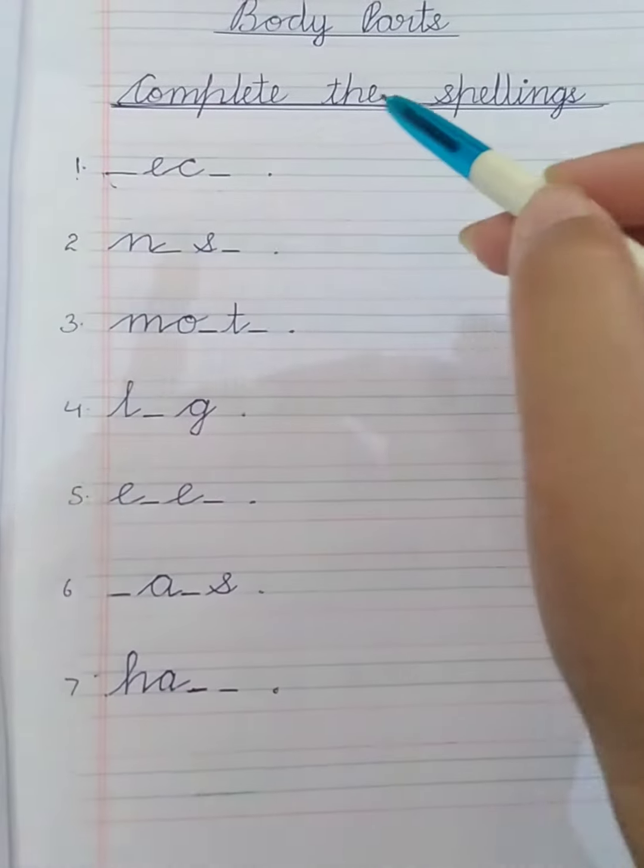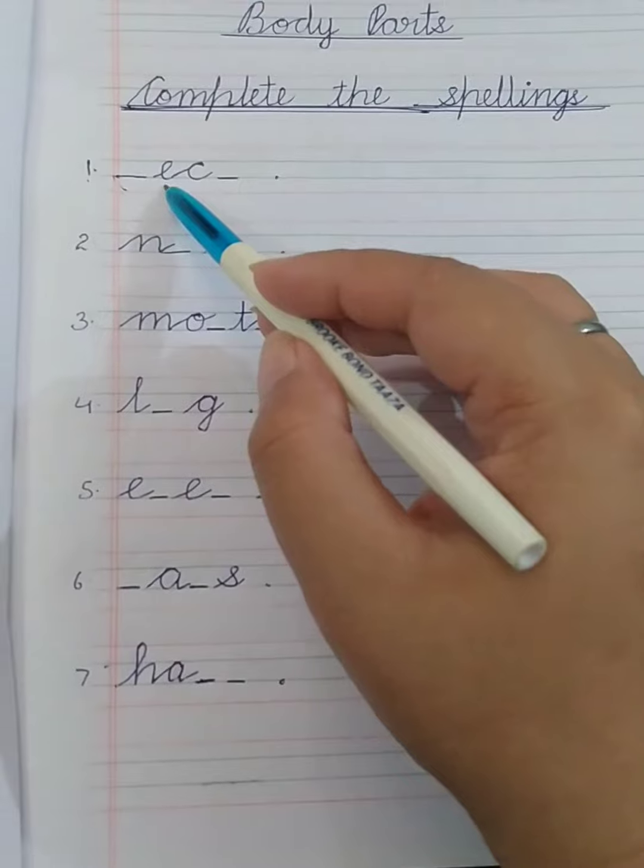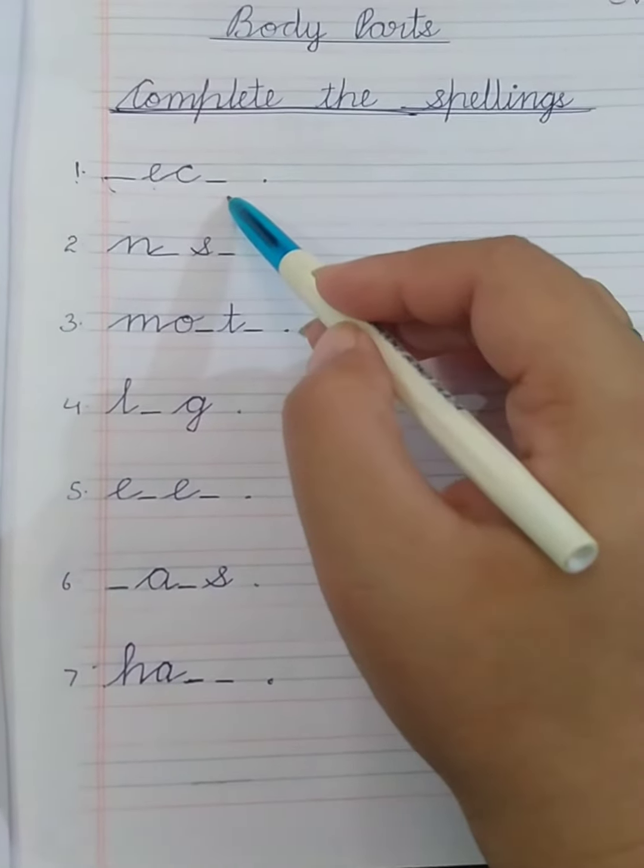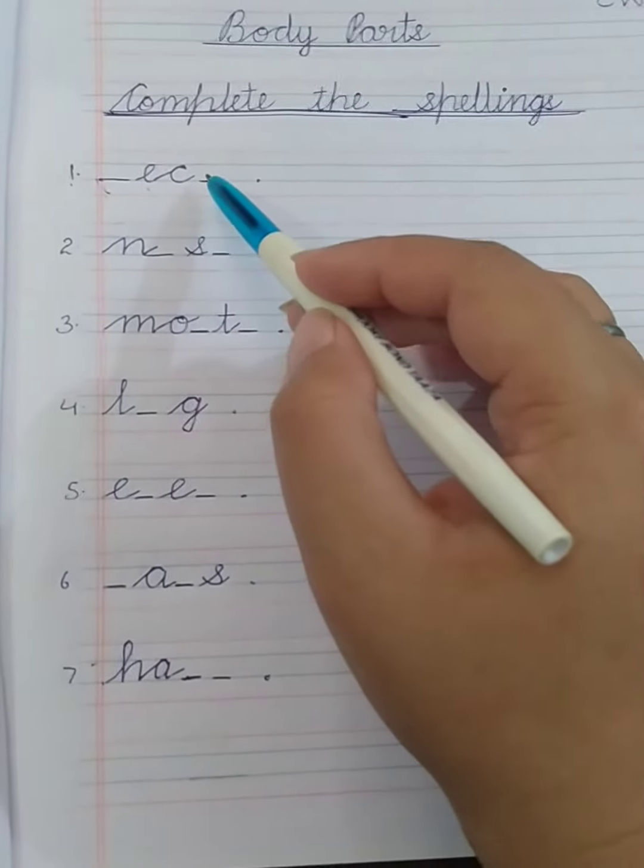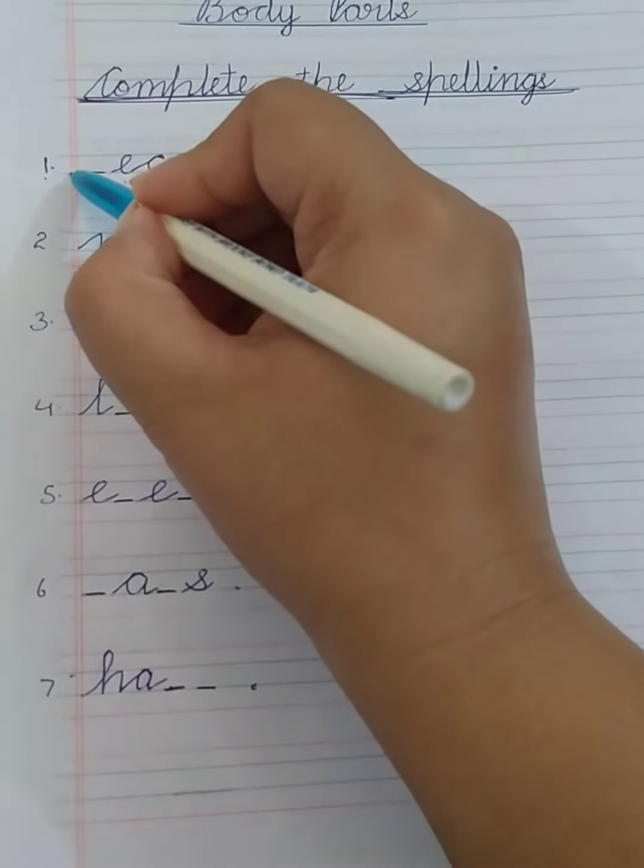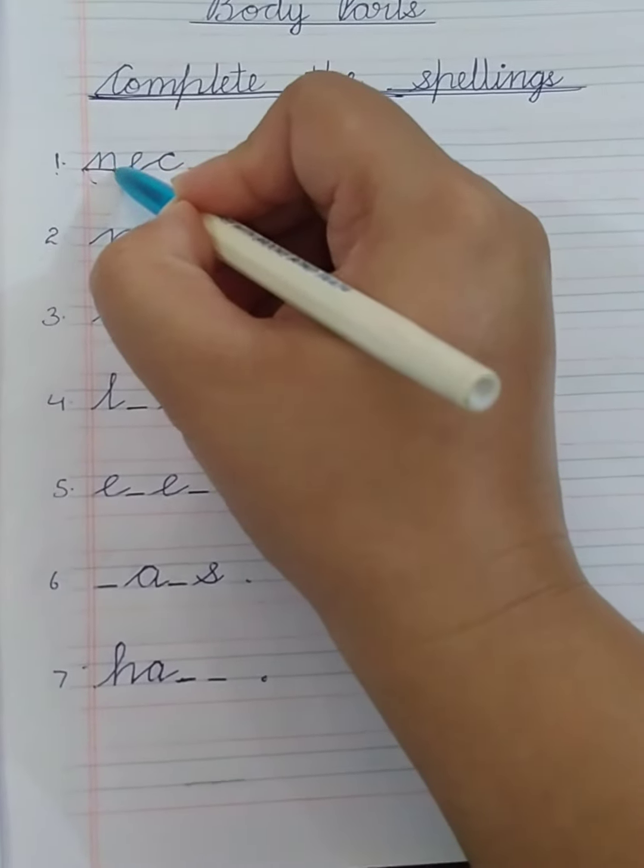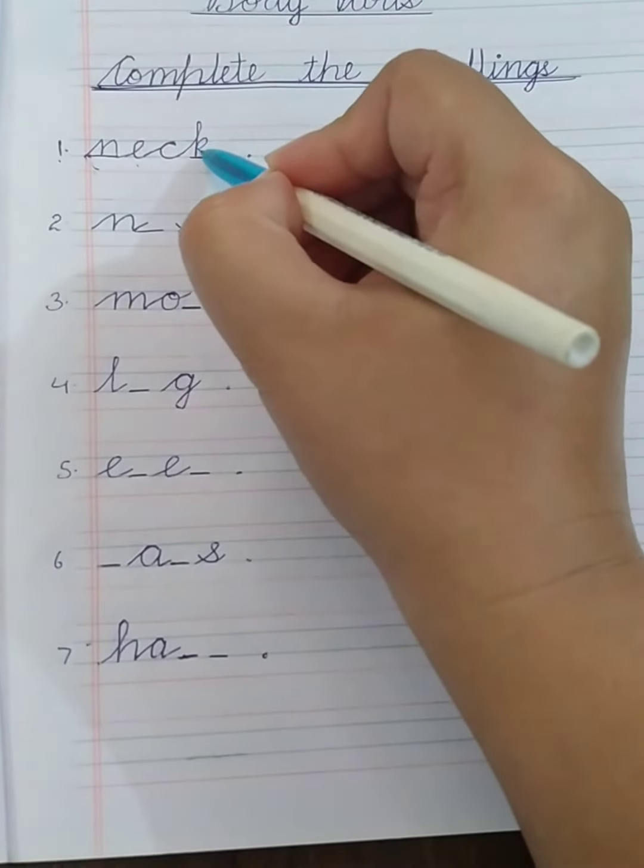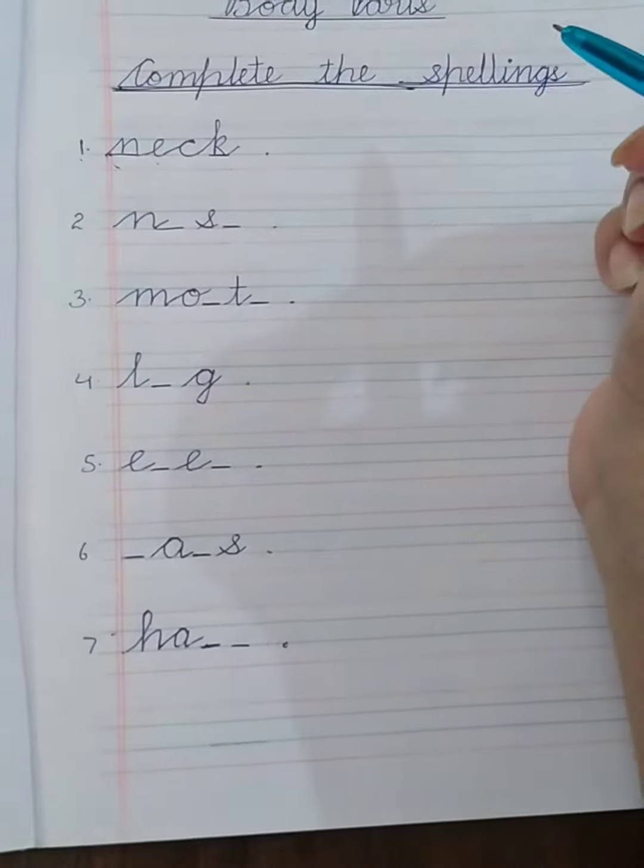So the first one is dash E C dash. Now E C, it is neck. So we will write here, N E C K neck, full stop.